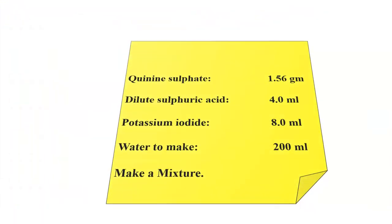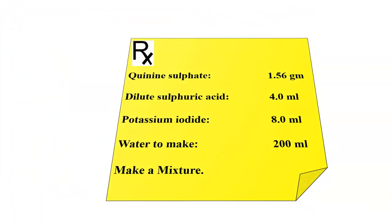This is the prescription that contains Quinine sulfate 1.56 grams, dilute sulfuric acid 4 ml, potassium iodide 8 ml, and water to make 200 ml. The direction given is to make a mixture.